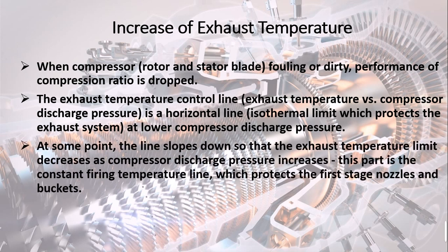At some point, the line slopes down so that the exhaust temperature limit decreases as compressor discharge pressure increases. This part is the constant firing temperature line, which protects the first stage nozzles and buckets.